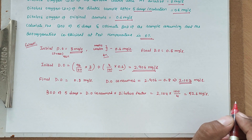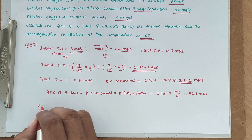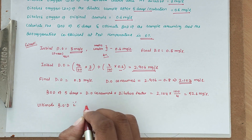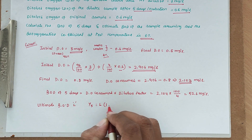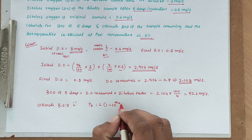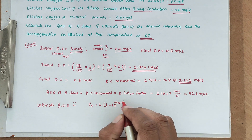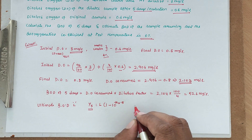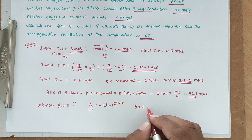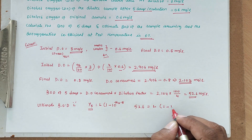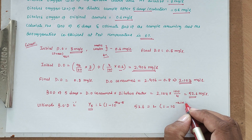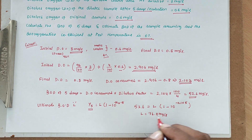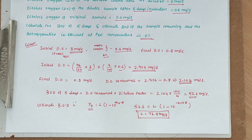Now the ultimate BOD is denoted as L. We find it using the formula: Y₅ = L × (1 − 10^(−KD × T)), where T equals 5 days. Substituting the values: 52.6 = L × (1 − 10^(−0.1 × 5)). Solving this, we get L equal to 76.9 mg/L. This is the ultimate BOD.